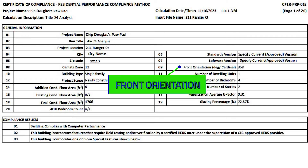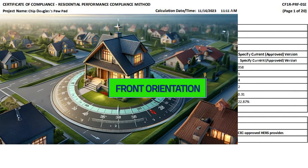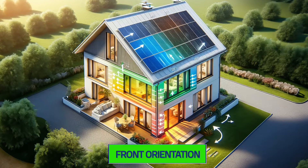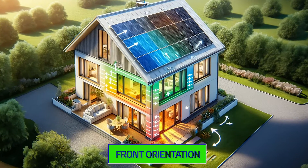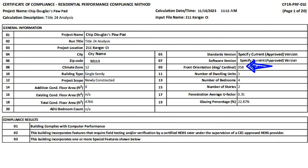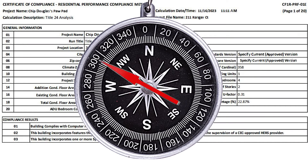Front orientation specifies the direction your building faces, which in turn affects your heating, cooling, and lighting requirements. This example faces 358 degrees, almost due north.